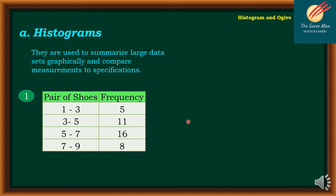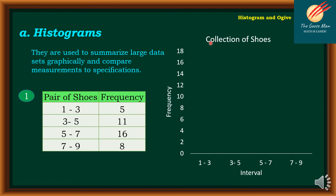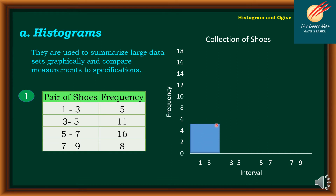To construct the histogram, first we write the title: 'Collection of Shoes.' On the x-axis we write the intervals: 1 to 3, 3 to 5, 5 to 7, and 7 to 9. On the y-axis we have the frequency. Make sure to create equal intervals — I decided to use an interval of 2, starting from 0 to 18. For 1 to 3, the frequency is 5. For 3 to 5, I have 11.